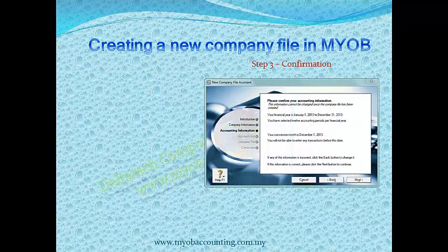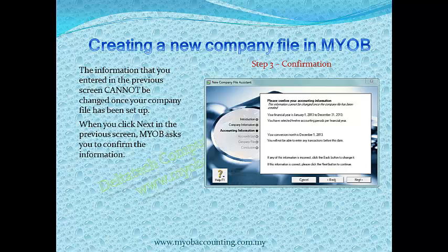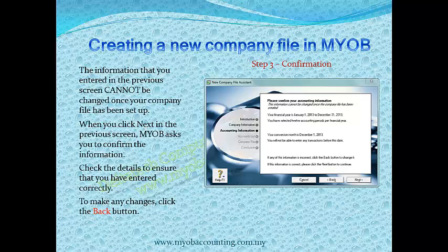This step is to confirm your accounting information. Note that the information you enter here cannot be changed once your company file has been set up. When you click Next in the preview screen, MYOB asks you to confirm the information. Check the details to ensure that you have entered them correctly. To make any changes, click the Back button. If you are satisfied with the information, click Next.